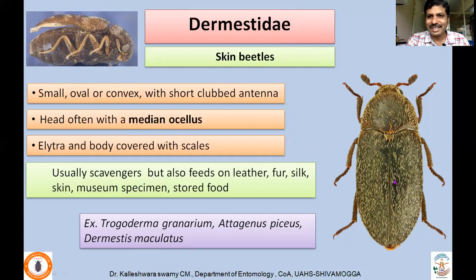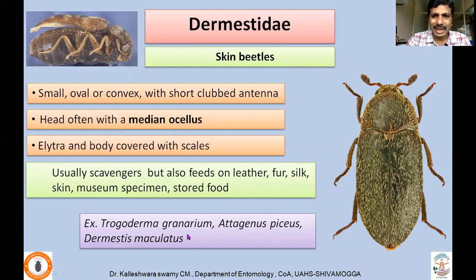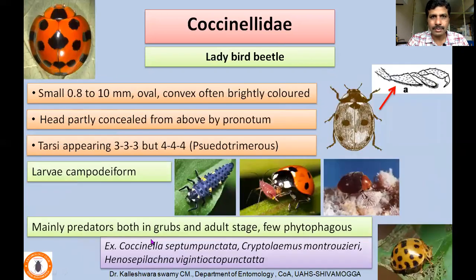Dermestidae are called skin beetles — skin-colored with many hairs/scales on the body. They are small, oval, convex, with short clubbed antennae. A distinctive character is the presence of a single median ocellus. The elytra and body are covered with scales. They are usually scavengers but also feed on feather, leather, fur, silk, skin, museum specimens, and stored food. Examples: Trogoderma granarium, Attagenus fasciatus, Dermestes maculatus. Some species are pests of stored grain.